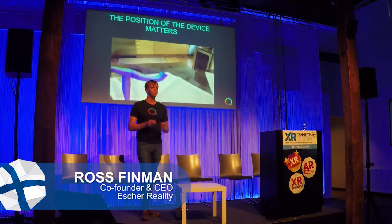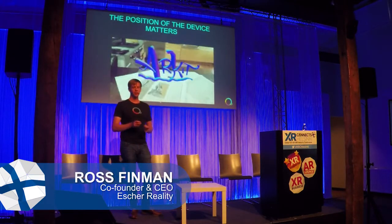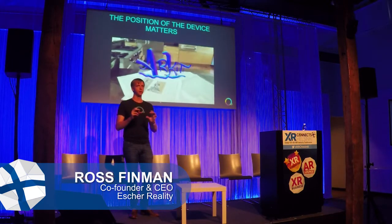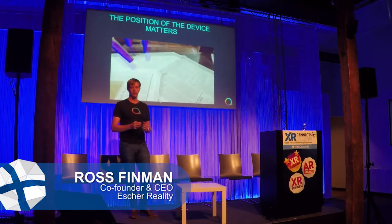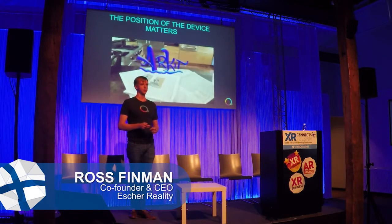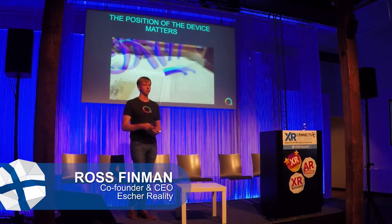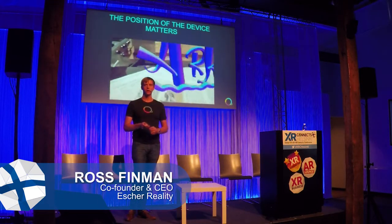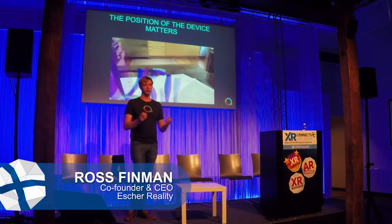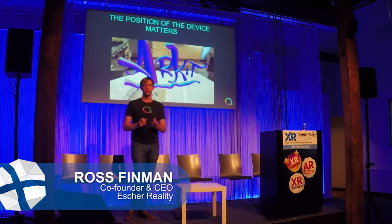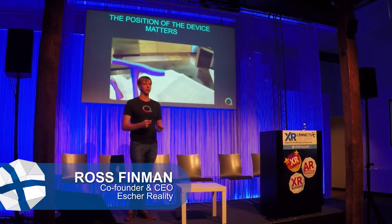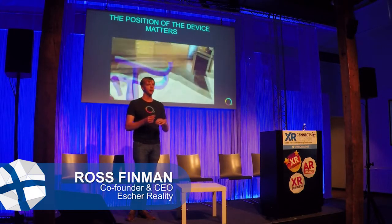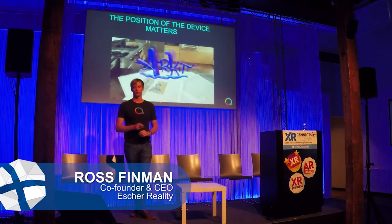First off: the position of the device in the world matters. Where you place the camera in the world can actually change the game state. For example, here you're actually drawing in augmented reality. We made a demo of a Pong game where you can use the phone as a paddle and go around in the world with different perspectives. As a developer, the pose associated with the device matters and can begin to change the game state — that's one of the two fundamental new mechanics you can play with to design the next level of gameplay.